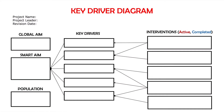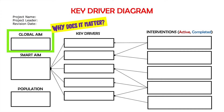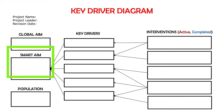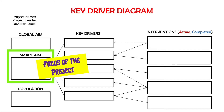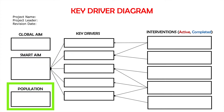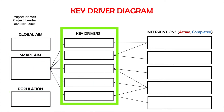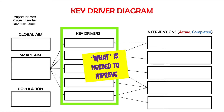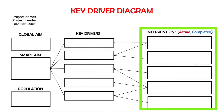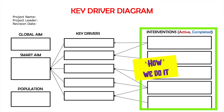A key driver diagram has multiple components. Why is this work important and why should I care? This is our global aim. Then we have the smart aim: what is the specific and measurable goal of the project? How will we know that we are improving, and what is the focused area of the project? Next, we have the key drivers — what are the essential components or drivers that will help us achieve the smart aim? What factors influence our smart aim? And then we have the actionable interventions and ideas that we will be testing and implementing to address these drivers. This is how we get there.